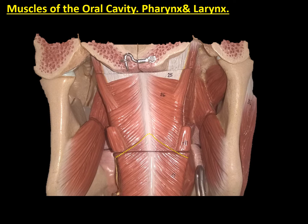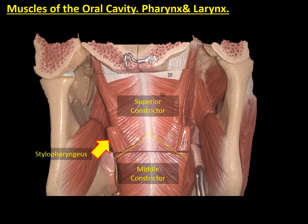By the dorsal part of this model, we can observe some of the muscles of the pharynx. We can see the superior constrictor muscle at the upper part. Inferiorly, we have the middle constrictor muscle. And in between both of them, we can observe some of the fibres of the stylopharyngeus muscle.